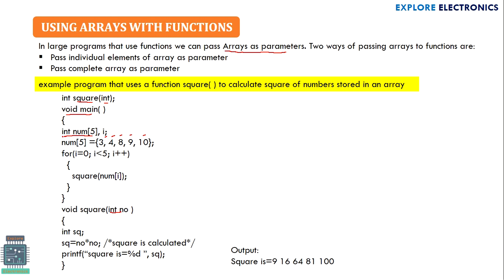We are declaring i as integer. Now we need to initialize values to this array — this is compile-time initialization. Using a for loop, we loop through this array and send each element to the function. We write a for loop starting with i equal to 0, i less than 5 (because our array size is 5), and incrementing i in each iteration.